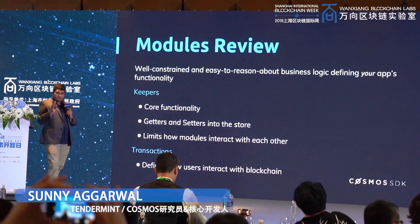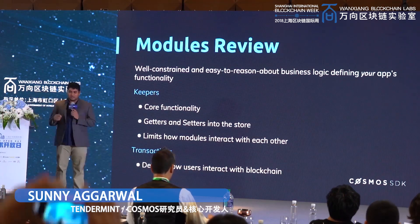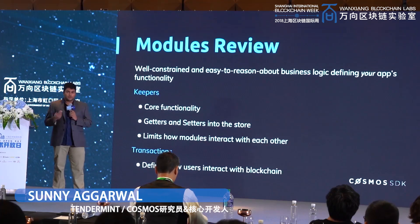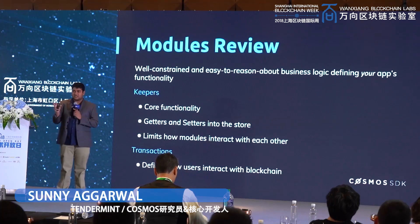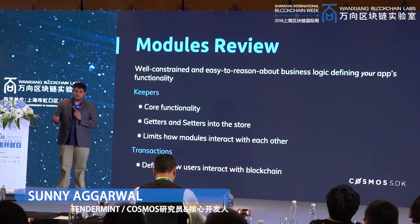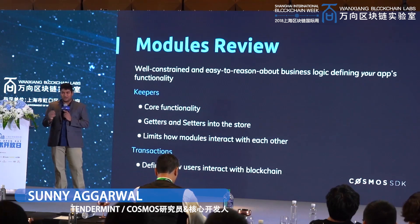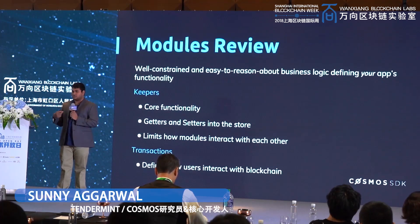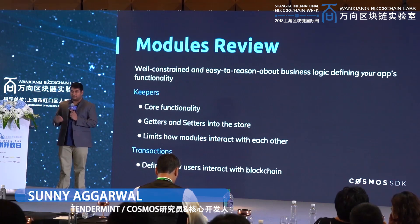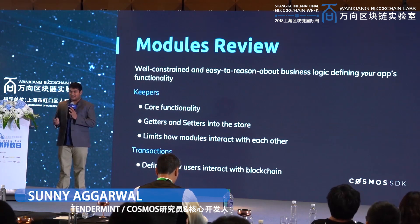It's a well-constrained and easy-to-reason-about system for defining your application's business logic and functionality. You can use this to write any type of blockchain you want. What we're working on right now is a project called the Cosmos Hub, which is a chain designed for interchain communication and helping other blockchains talk to each other. You can use the Cosmos SDK to do all sorts of things — there are many projects already building on it: IrisNet, video streaming, payment channel networks, plasma blockchains. The SDK is a super general-purpose tool that you can use to build any blockchain you want in a very easy way — no more Solidity, no more C++, it's all in Go.